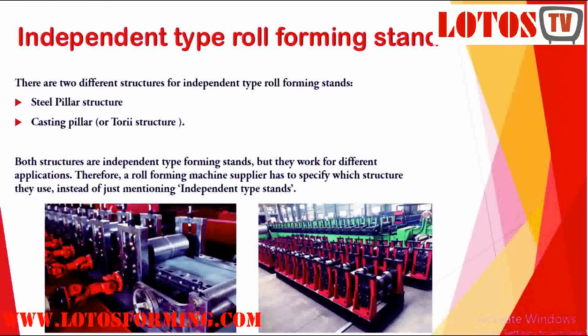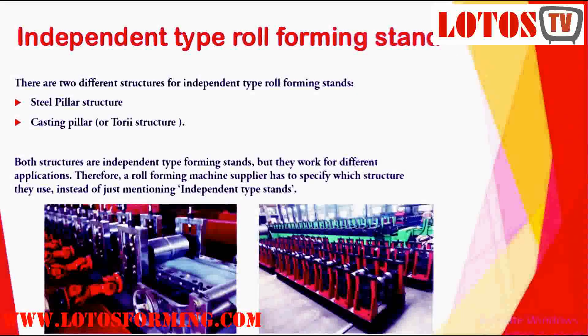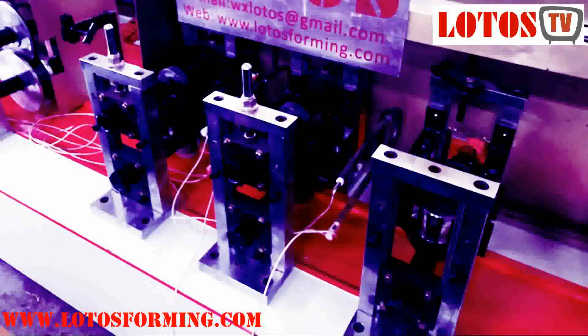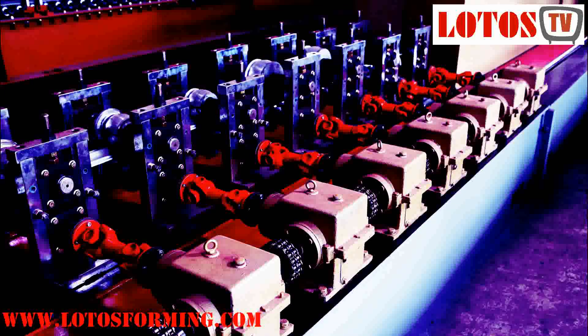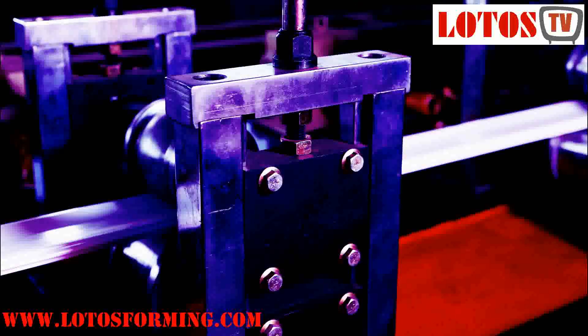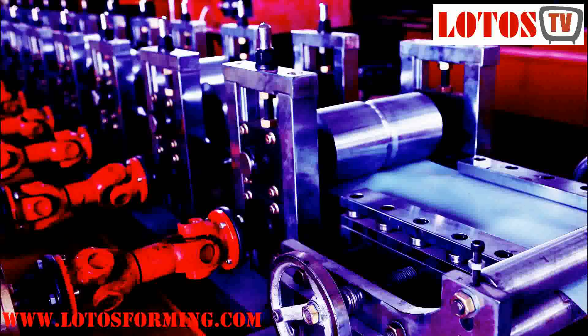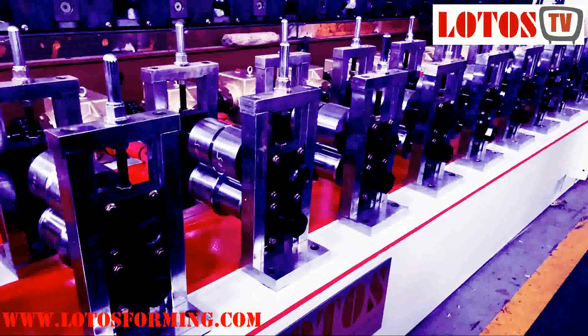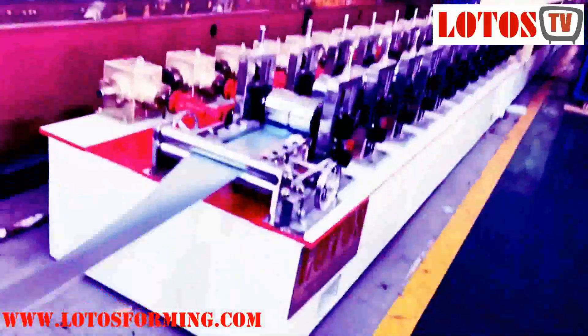Now we are going to independent roll forming stands. As you can see from our diagrams, there are two different structures for independent type forming stands: one is the guide pillar structure, and the other is the torii structure or casting pillar. Both structures are independent type forming stands but they work for different applications.